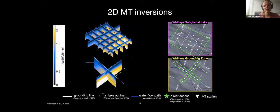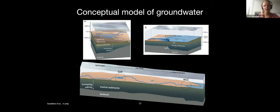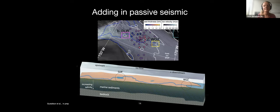Our conceptual models from both MT surveys show thick sediments containing groundwater that increases in salinity with depth. Because our results looked so similar, we think they're representative of this broader system of deep groundwater within thick sediments throughout the region. Adding passive seismic confirms this — seismic data points colored by sediment thickness show averages of half a kilometer to a kilometer, really consistent with what we saw with MT.